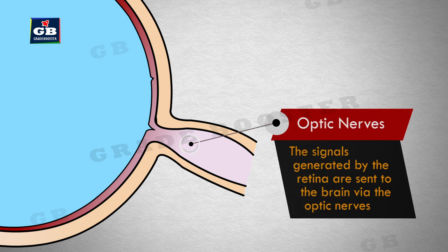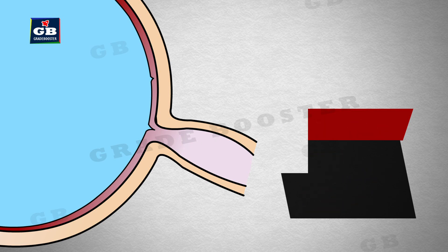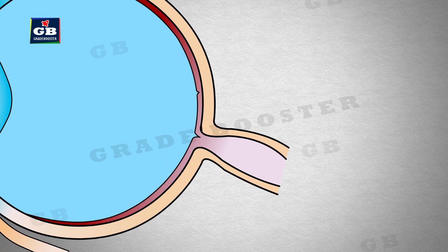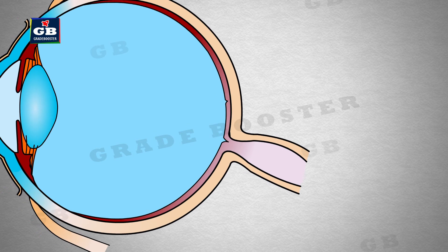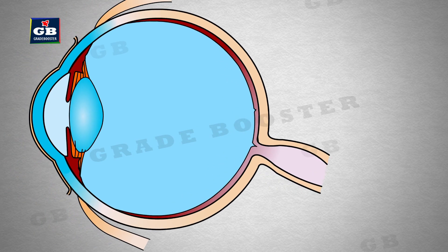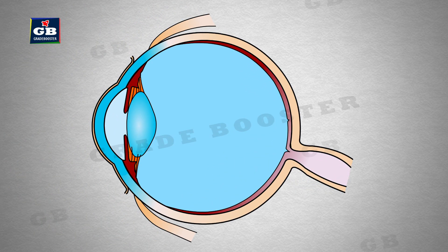These are optic nerves. The signals generated by the retina are sent to the brain via the optic nerves. This is all about the different parts of the human eye.